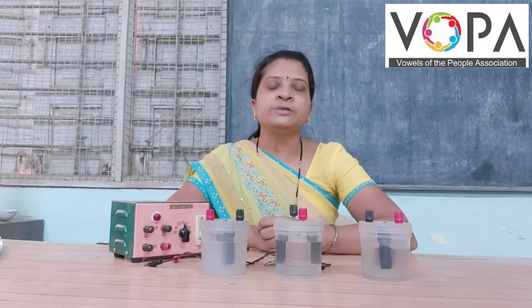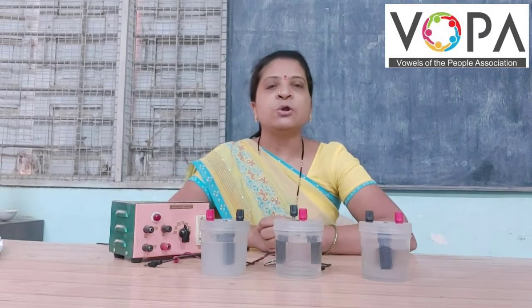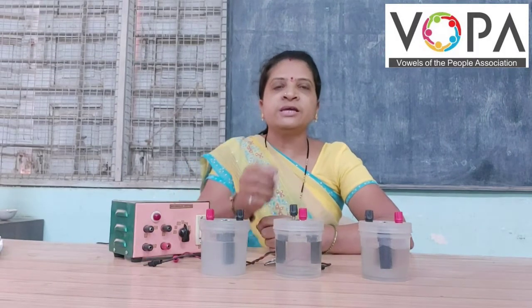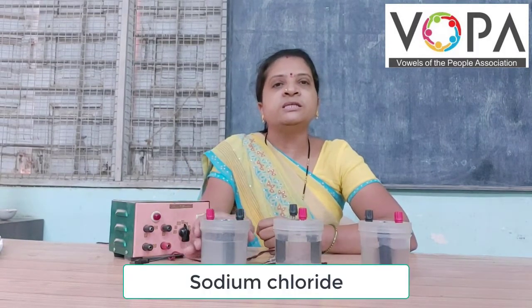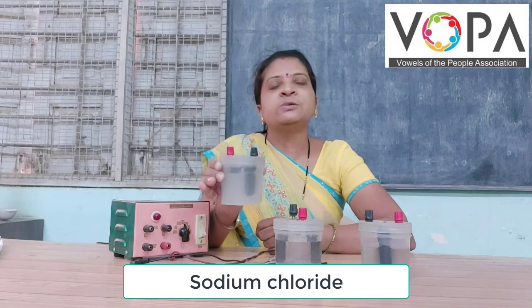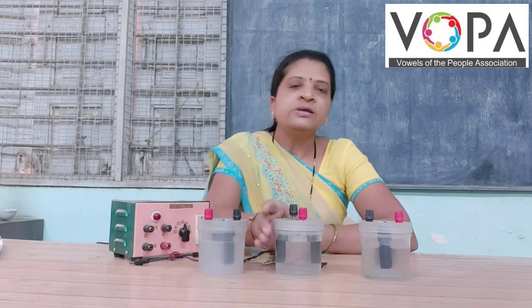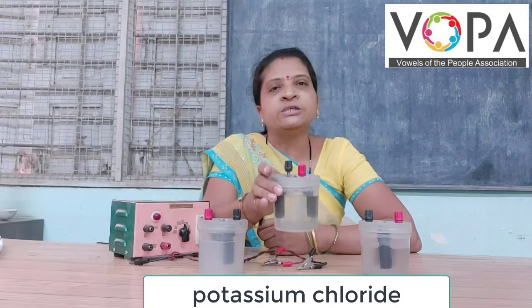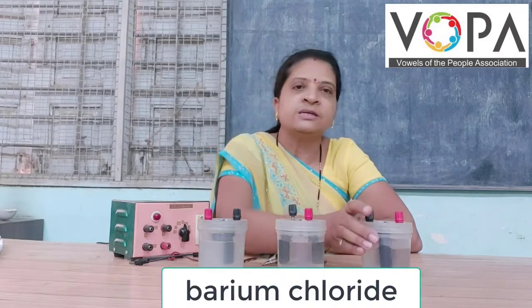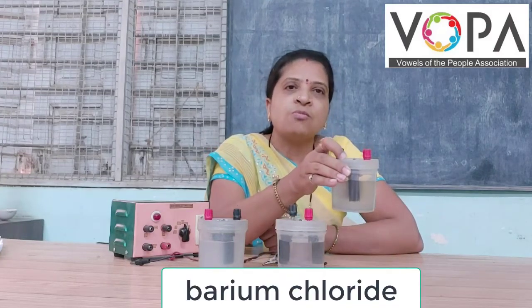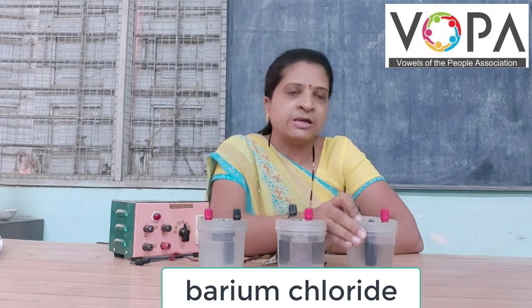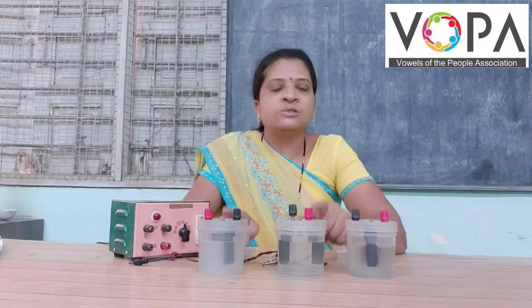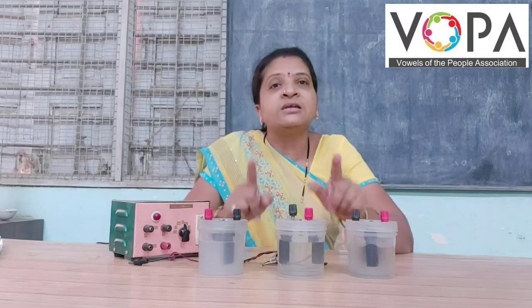Now we are going to discuss the properties of ionic compounds. For that, we have taken three compounds: one is aqueous solution of sodium chloride, aqueous solution of potassium iodide, and aqueous solution of barium chloride. Now we have to see whether all these solutions are electrolytes or not.